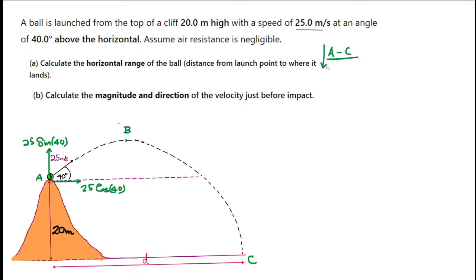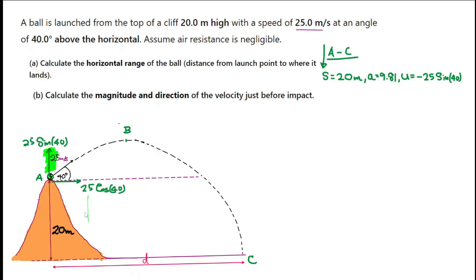Writing from A to C, I need to choose a direction — I'll write downwards. The displacement s is 20 meters (vertical motion only — this is really important). The acceleration downwards is 9.81 m/s², which is positive. The initial velocity is 25 sin 40, but it is negative because the initial velocity is actually upwards, while I'm writing the equation in the downward direction. This sign is the part you need to be very careful with.